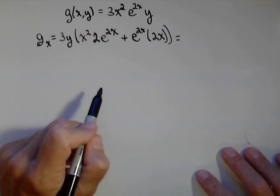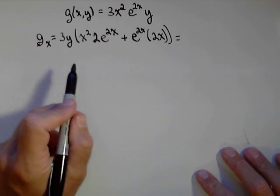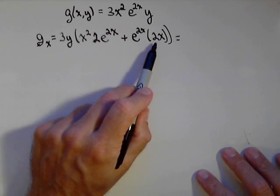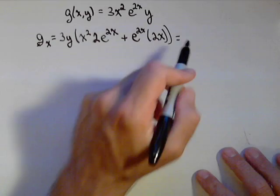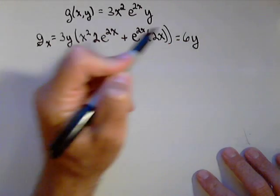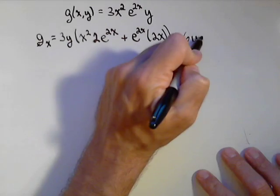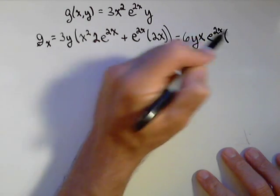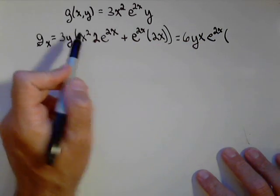It's not pretty, but we're able to take it. We can simplify a little bit. What all can we pull out of here? We can pull out a 2 and an x and an e^(2x). So, pulling out a 2, that becomes 6yx e^(2x) times (x + 1).